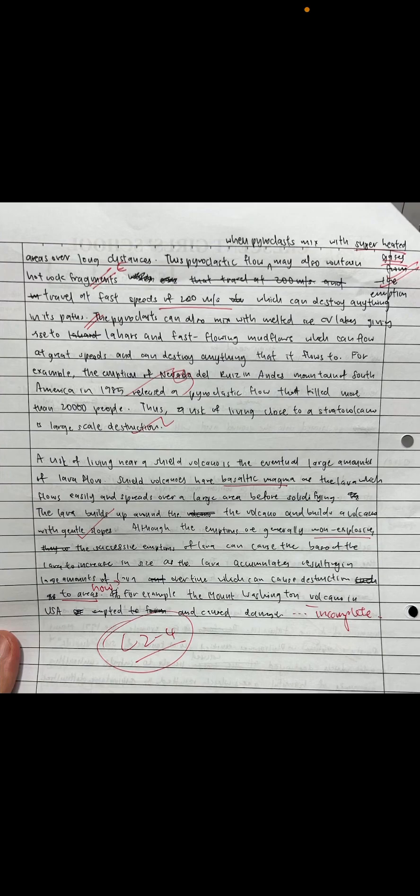In the final paragraph, she moves on to talk about shield volcanoes, correctly listing basaltic magma. However, I would prefer she stick to the same terminology for comparison. Since she earlier talked about silica content for stratovolcanoes, she should address silica content here too — whether it's high or low — and then move on to viscosity and the consequential effect on the type of eruption.